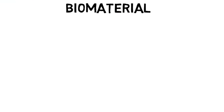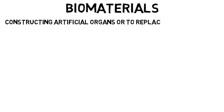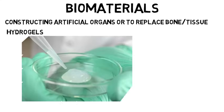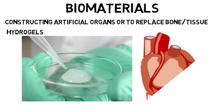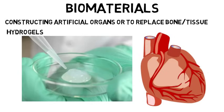You could work on biomaterials, which is something biomedical engineers take classes on as well. Biomaterials are used for constructing artificial organs or to replace bone or tissue, and these materials need to interact well with the human body and not cause harm. For example, there are hydrogels that are needed to repair damaged heart tissues. This incorporates biology and is something you could take an elective class on or explore in grad school.